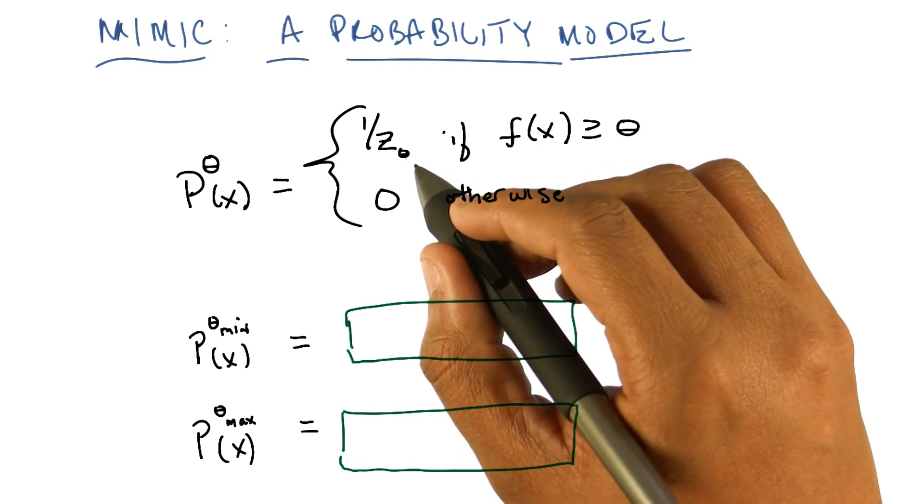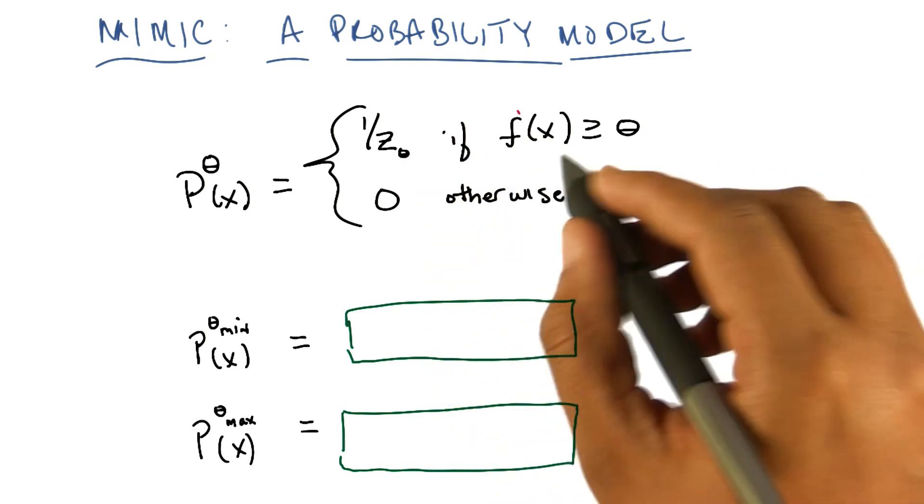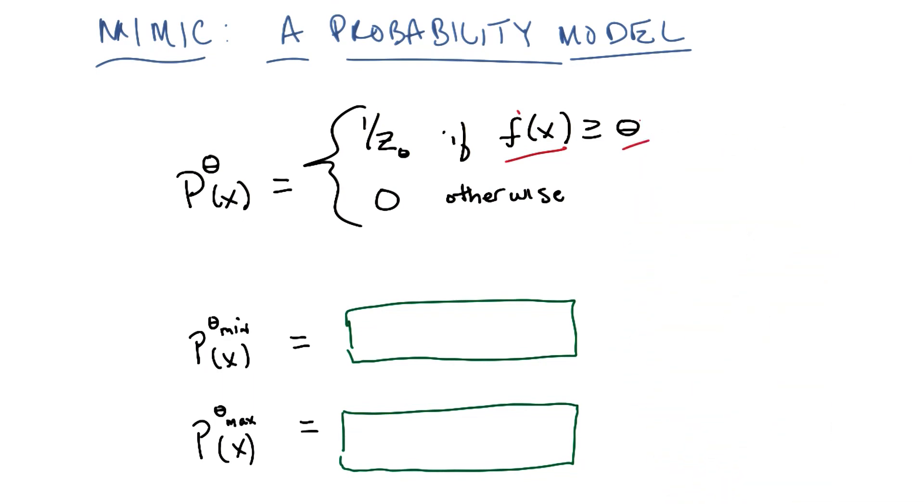It is one over z sub theta for all values of x such that the fitness function is greater than or equal to theta. And it's zero otherwise. So do you understand that?